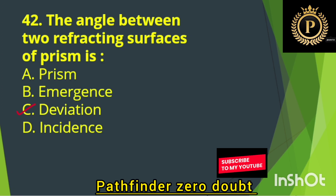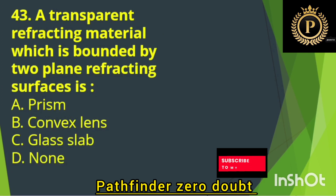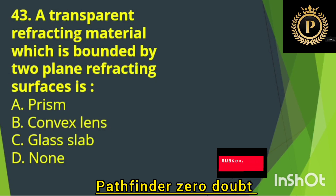A transparent refracting material which is bounded by two plane refracting surfaces, each — Option A: Prism.